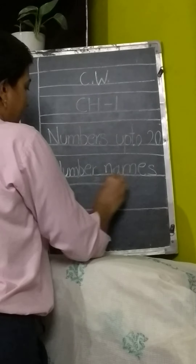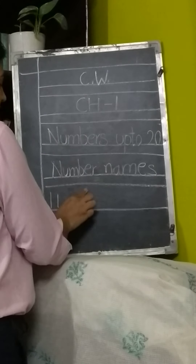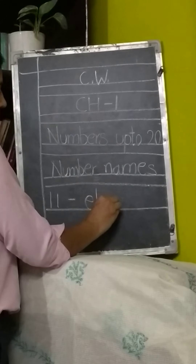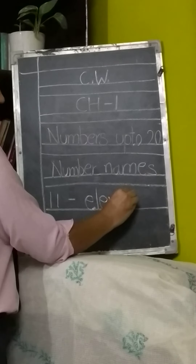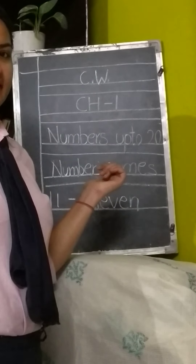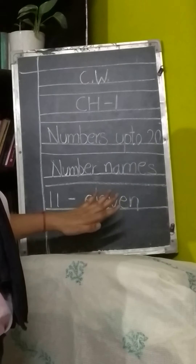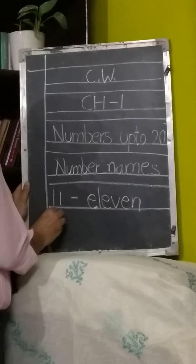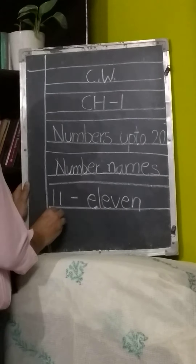Its name is 11. And in words, we write 11 as — write in small alphabet — E-L-E-V-E-N. 11. Is it clear? Can you say this? Now leave the next box.